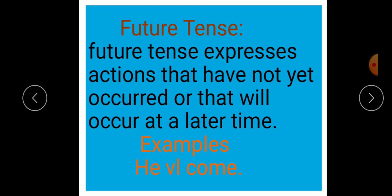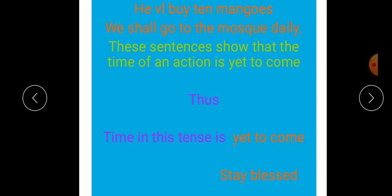The time in future tense is yet to come. Abhi kaam nahi hua hai, abhi hone waala hai, jaise example mein diya hai, he will come. Wo aaye ga, wo abhi aaya nahi, aaye ga, wo kaam hone waala. He will buy ten mangoes. We shall go to the mosque daily. In this way, these sentences show that the time of an action is yet to come.